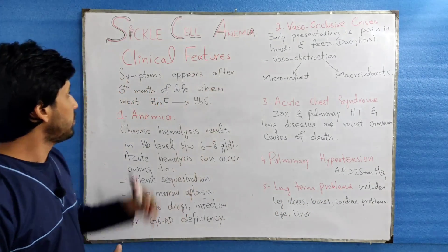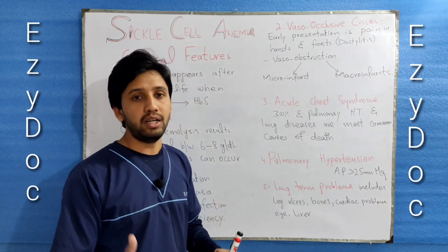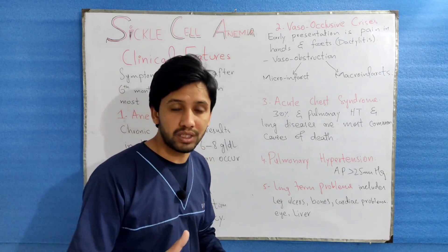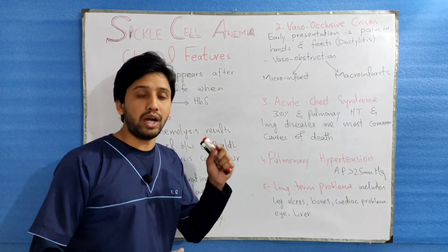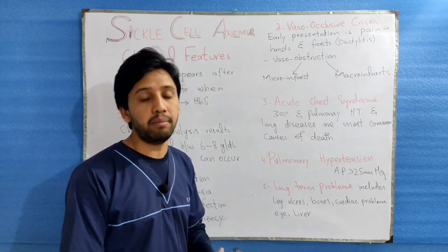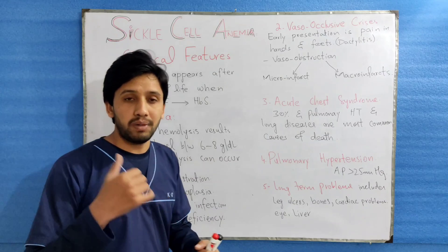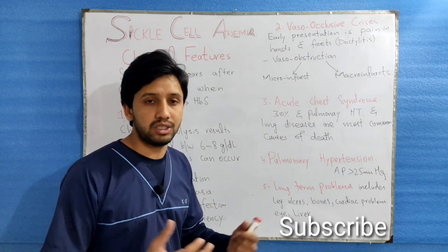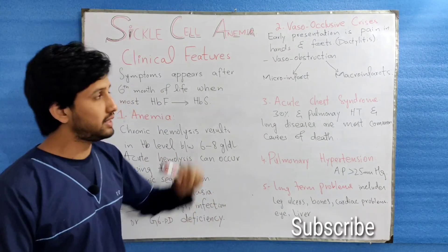The sickle cell anemic patient will usually appear with symptoms after six months of life, when most of the hemoglobin F is replaced by HbS. The first clinical feature is anemia, which occurs due to the sickling process — destruction of RBCs due to their deformed shape. Chronic hemolysis results in Hb levels ranging between 6 to 8 g/dL. Acute hemolysis may occur due to splenic sequestration, bone marrow aplasia, drug use, infection, or G6PD deficiency.